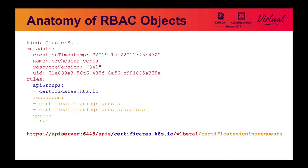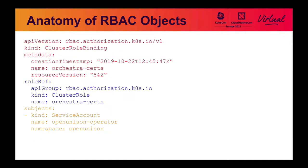You then list your verbs. Once you have your role, you have to bind it to subjects. This part is pretty straightforward. Your role ref specifies what role you're going to reference. If this is a role binding, you can still reference a cluster role — this way you can centralize your management of roles without having to recreate it in every single namespace. And then finally, you list your subjects.